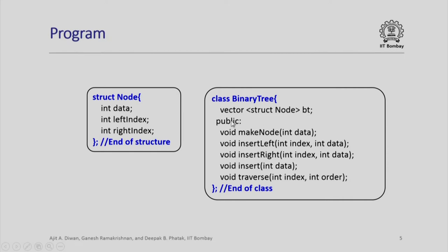There are of course public member functions in this binary tree which are make node with data as a parameter, insert left and insert right with an index and data as parameters, and just insert if you want to insert the data in a particular node.